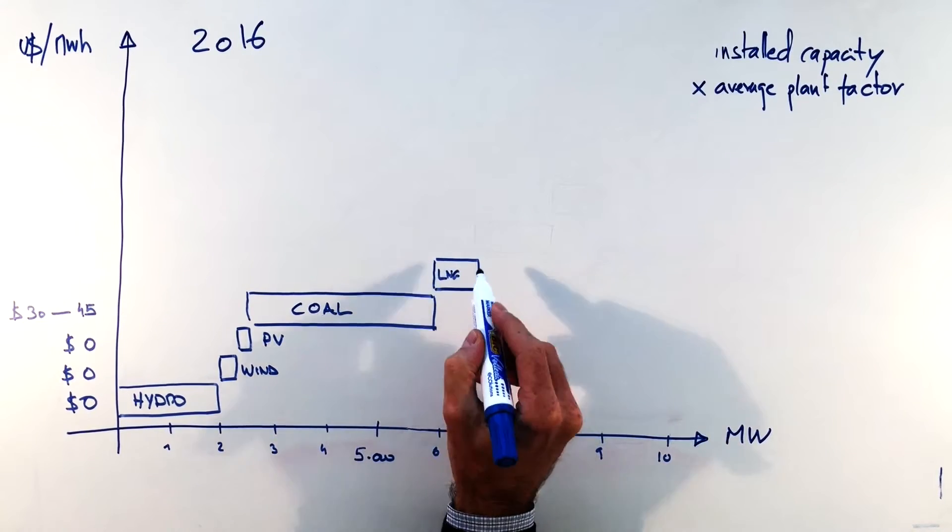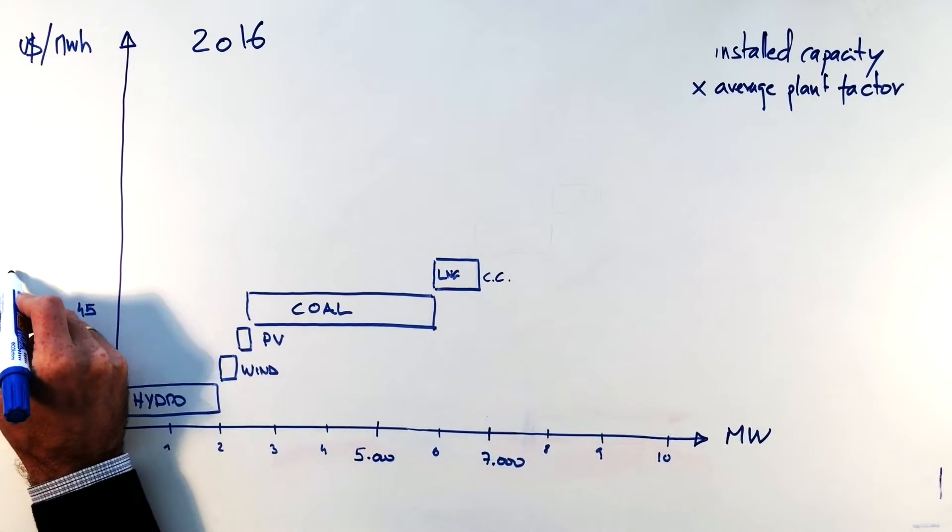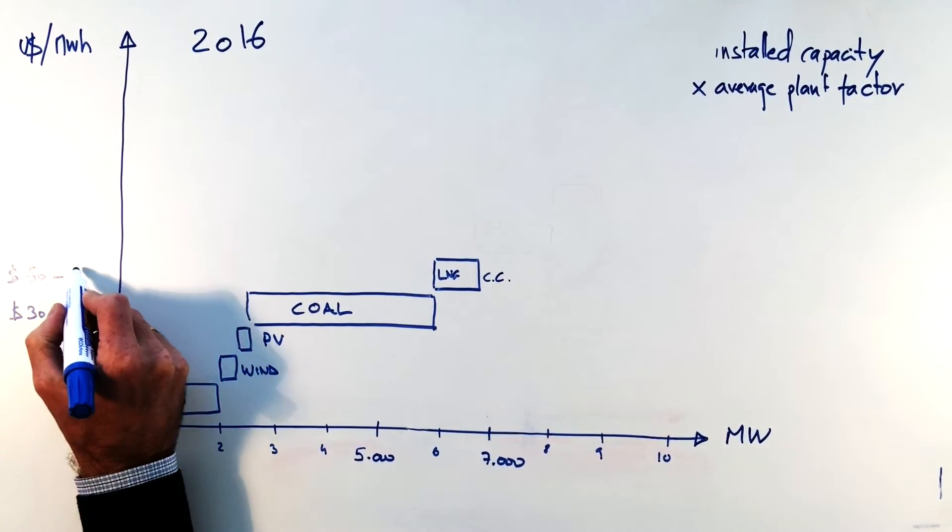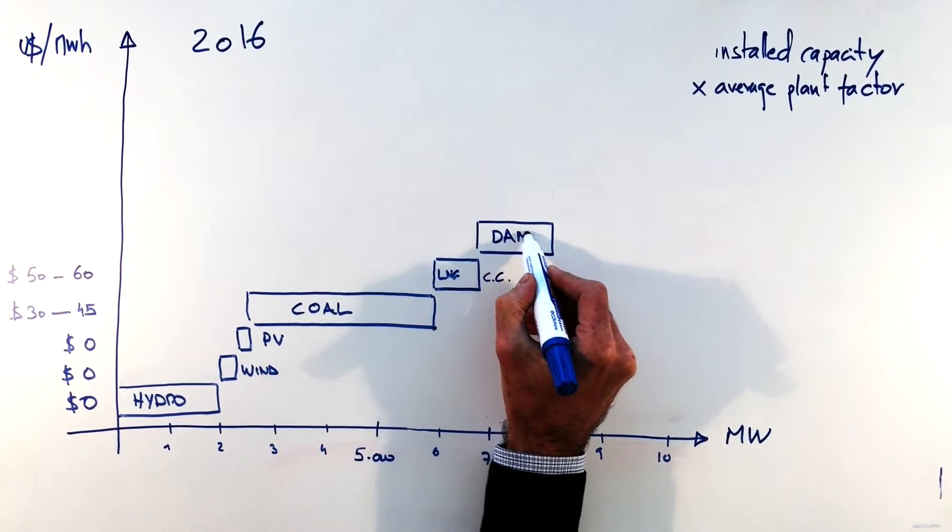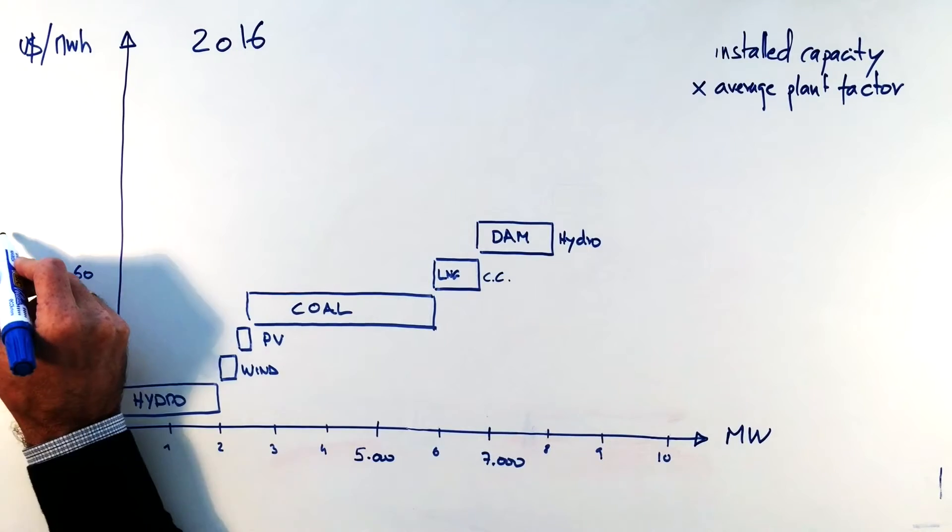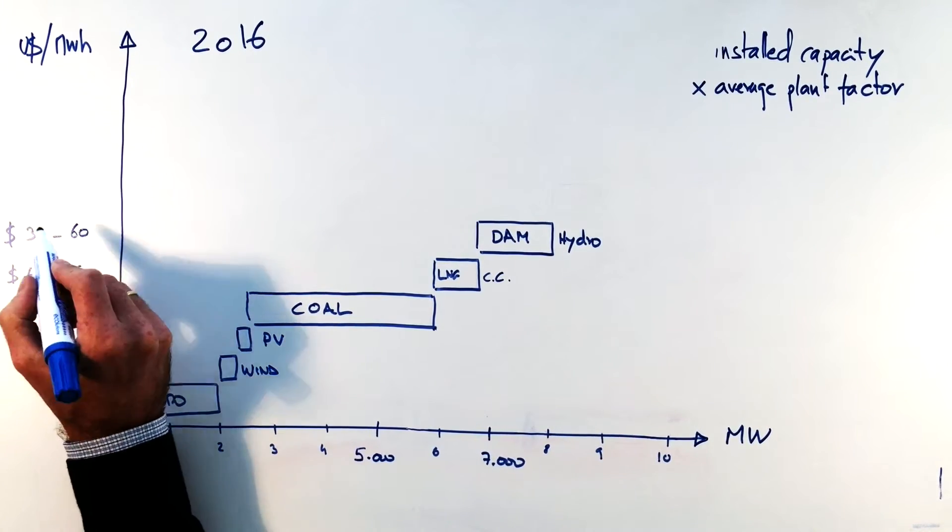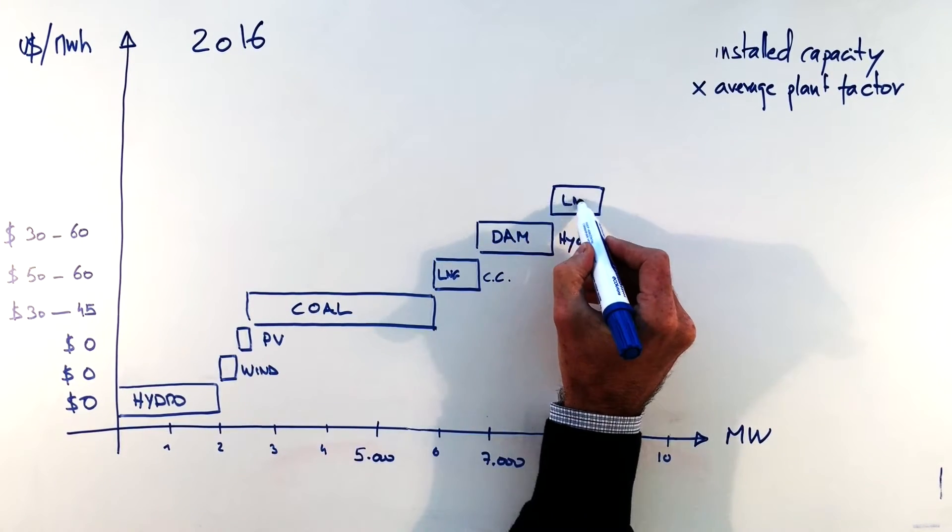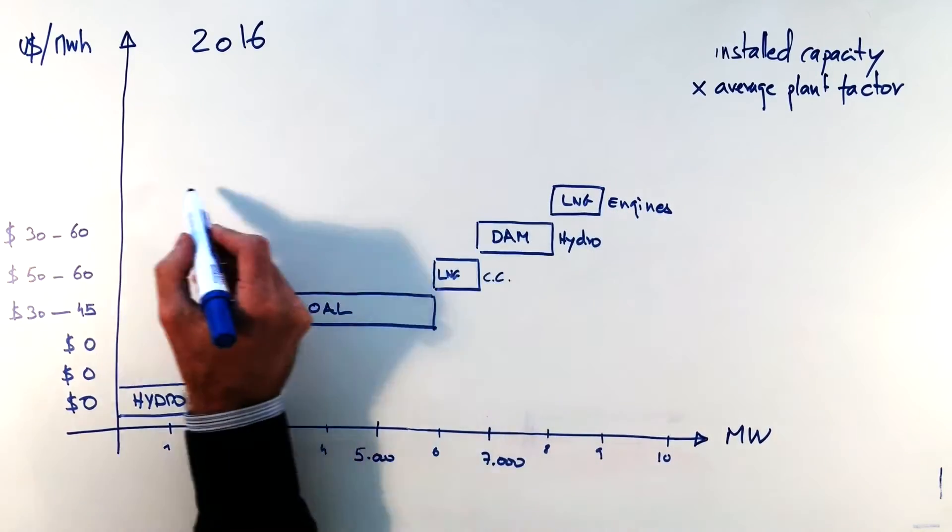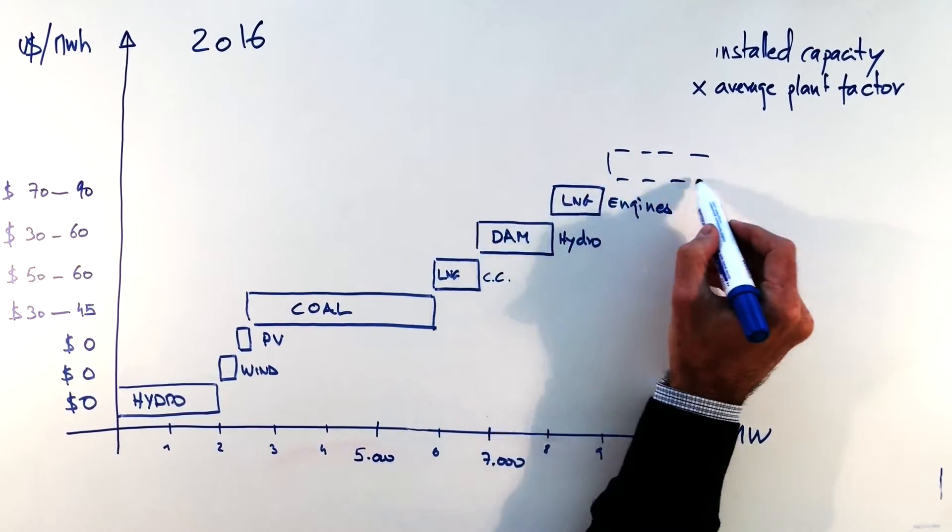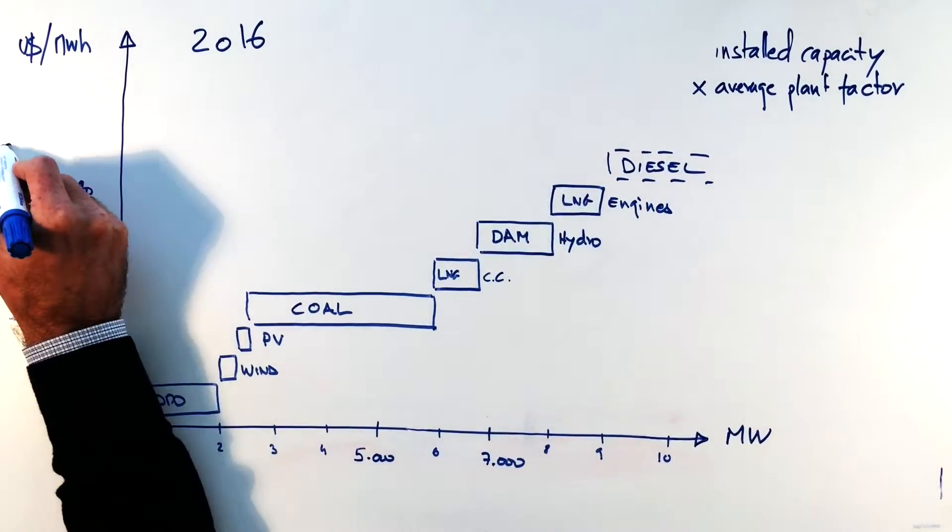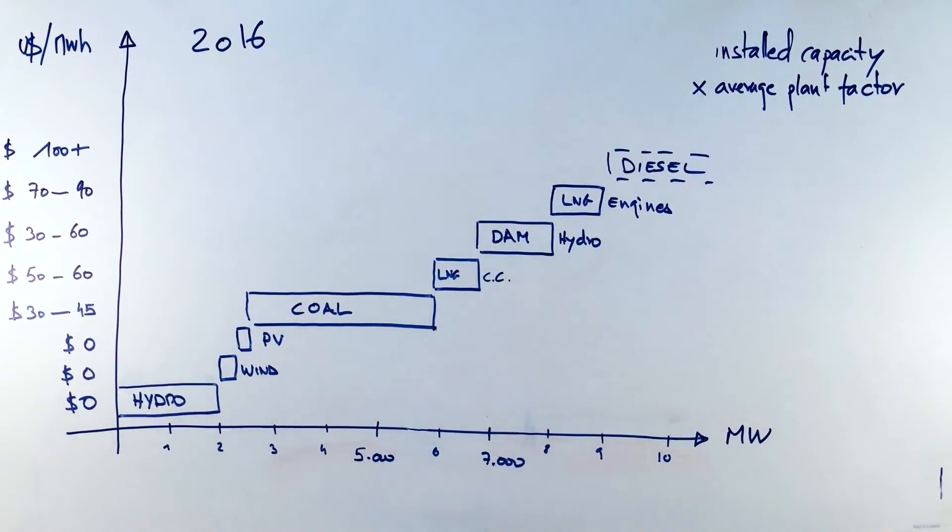Then we have LNG combined cycles roughly 1,000 megawatts at a cost of 50 to 60 dollars per megawatt hour and then we have dam hydro which serves as stability with prices ranging between 30 and 60. On top of that we have LNG engines or open cycles with a cost between 70 and 90 dollars per megawatt hour and finally we have diesel engines at 100 dollars plus.